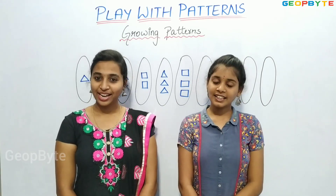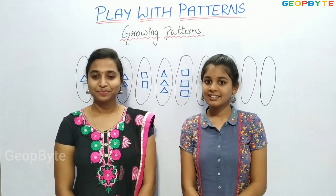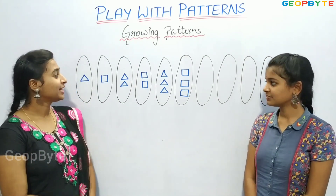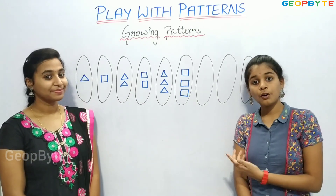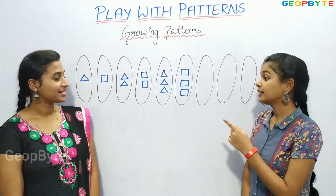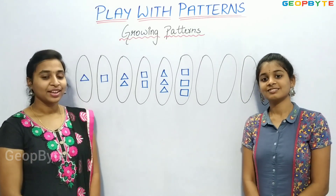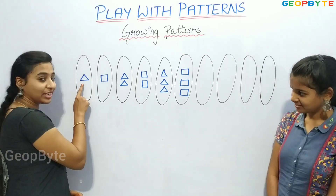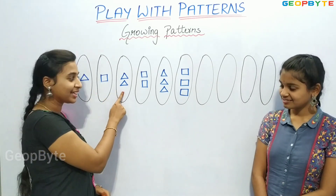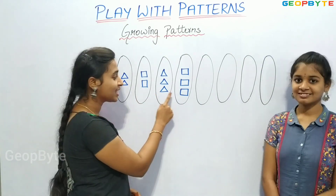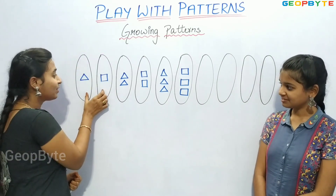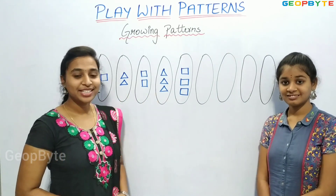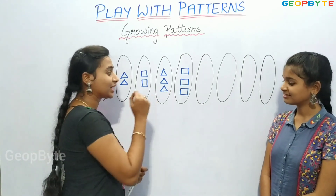Now let us get into the topic: growing patterns. Hey kids, see here. I have made a new pattern, but it keeps on growing — it does not repeat. So it is having a rule. Can you guess the rule and continue this pattern? Yes, I understood the rule. Here we have one triangle, one square. Two triangles, two squares. Three triangles, three squares. That is, we used the rule: here we used one, here we used two, here we used three. So the next number is four. Let us draw four triangles and four squares.